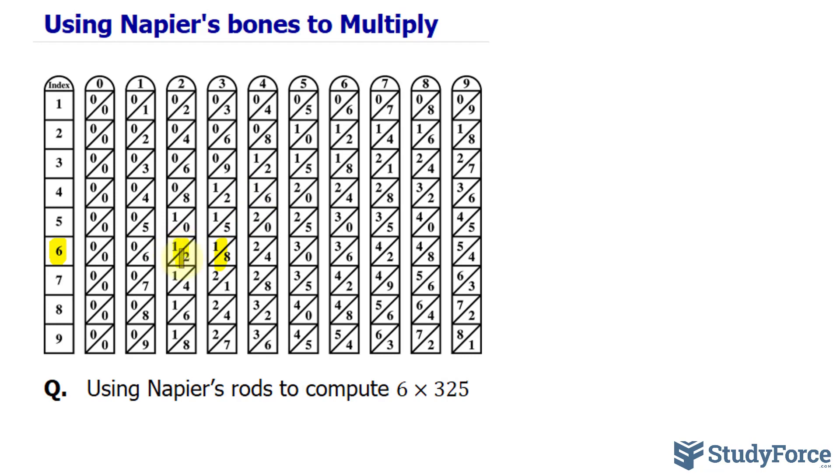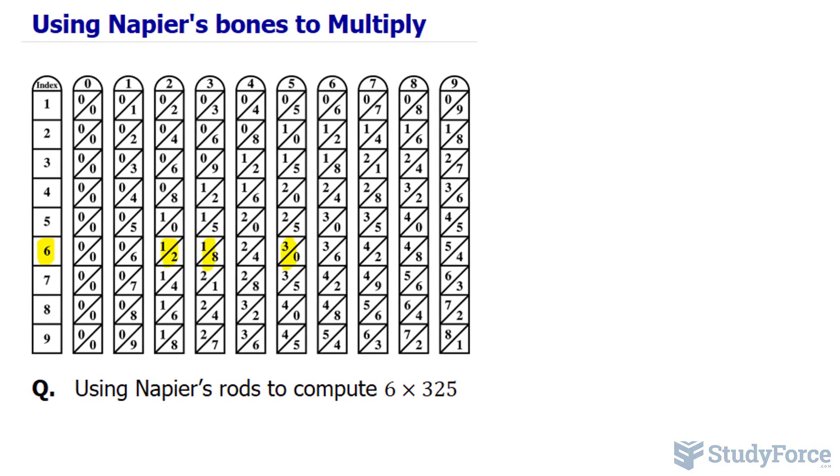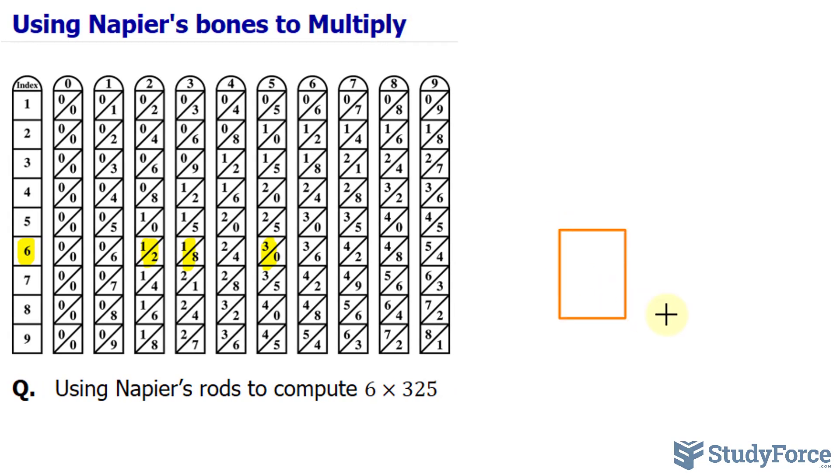We have this block, that block, and that block. So we have 3 blocks. I'll create a rectangle and write down their digits.